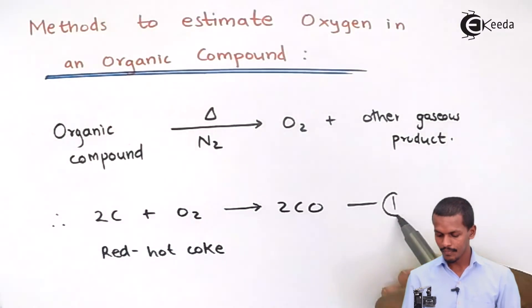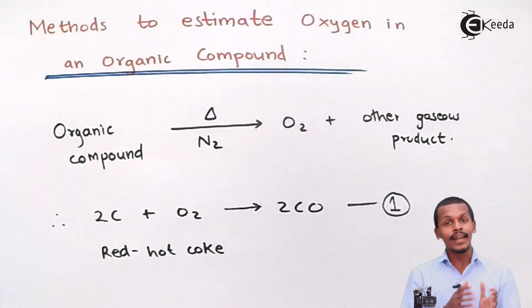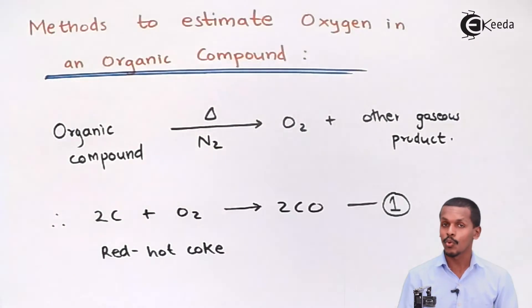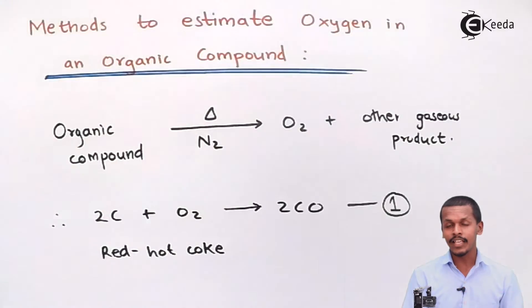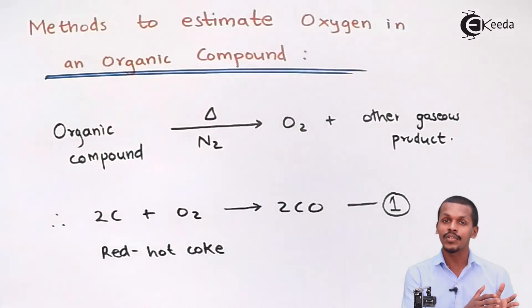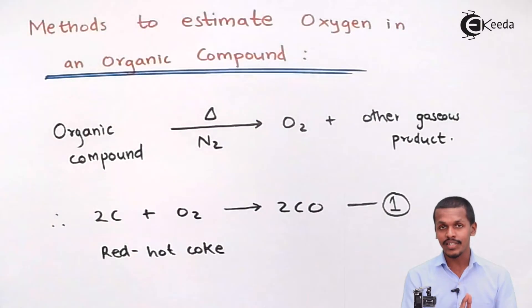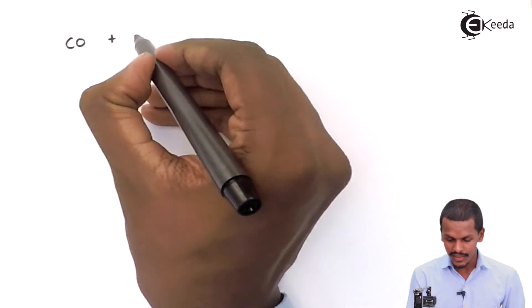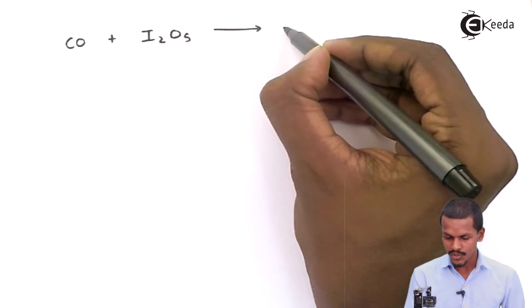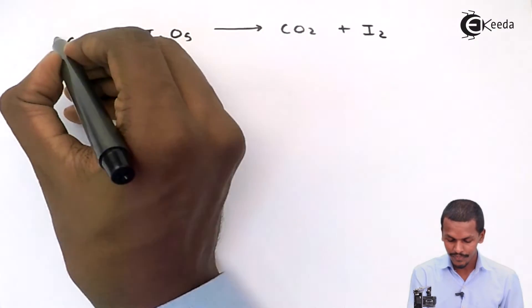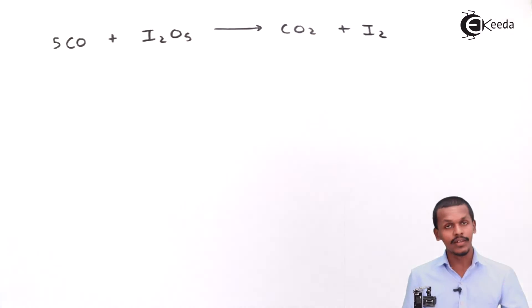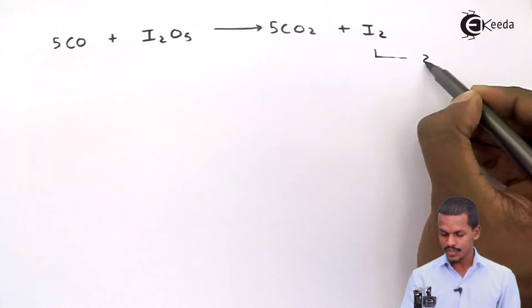In Equation 1, carbon reacts with oxygen to produce carbon monoxide. This carbon monoxide is then further reacted with iodine pentoxide (I₂O₅), and in that case an oxidation reaction takes place, converting carbon monoxide into carbon dioxide. The balanced reaction is: 5CO + I₂O₅ → 5CO₂ + I₂. Let this be Equation 2.